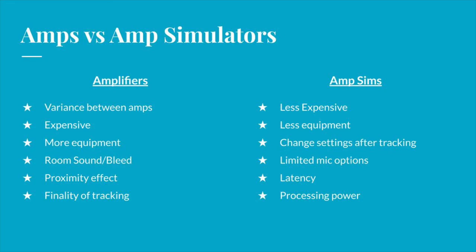On the other hand, amp simulators are much less expensive, generally costing around $50 to $200, and with an amp sim software you generally get hundreds of different amp sounds. You also require less equipment to record with an amp sim. As mentioned before, you really just need a DI box, your interface, the software, and your necessary cables. The big draw with amp simulators is the fact that you can change the sound without having to retrack. You simply go into the software, change the settings you want, and you don't have to re-mic the amp, reset it, or get a new take.